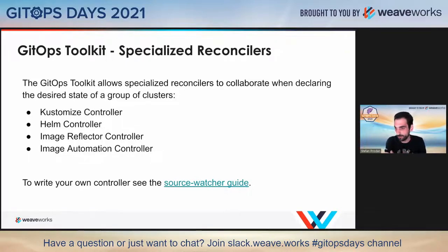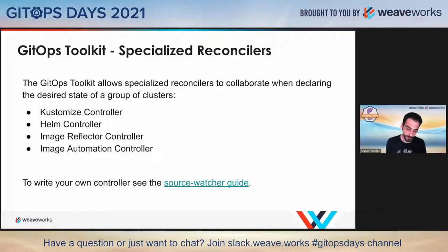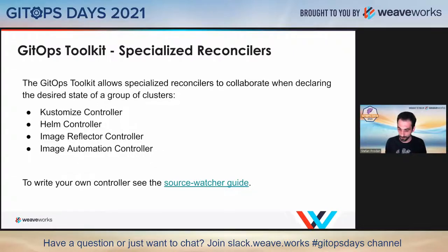If you want to extend Flux with other things, like a Terraform controller or JSON and stuff, or handle pull requests, you can use the client SDK that we have. We also have some guides on how you can create your own specialized reconciler — using controller runtime and Kube builder to create a Kubernetes controller from scratch. You can subscribe to the source controller events, get those manifests, and do your own thing with them, even if they contain Terraform files or whatever else.